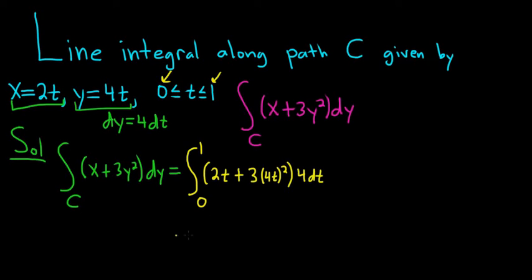Now we just have to carefully simplify. This is the definite integral from 0 to 1 of 2t. When we square the 4 here, we're going to get a 16. We square it because of the 2. 3 times 16 is 48. And then we square the t and we get t squared. And then we still have this 4 here, so 4 dt.